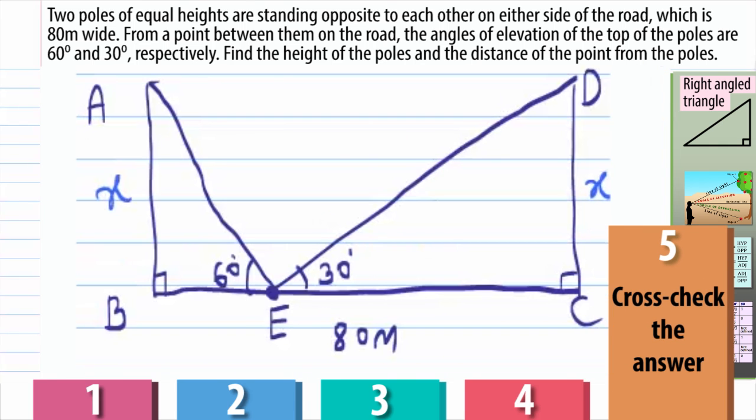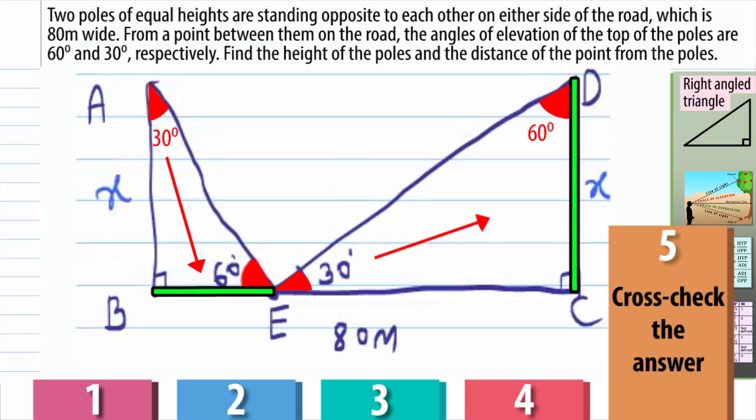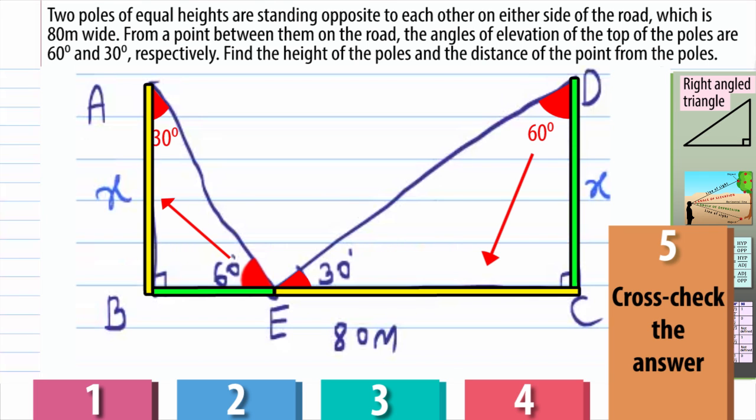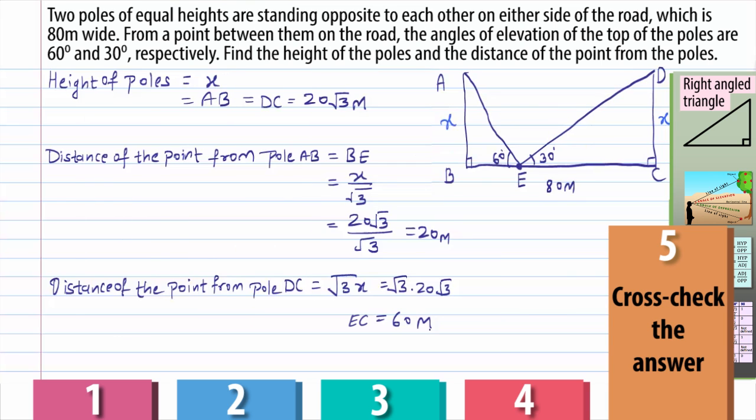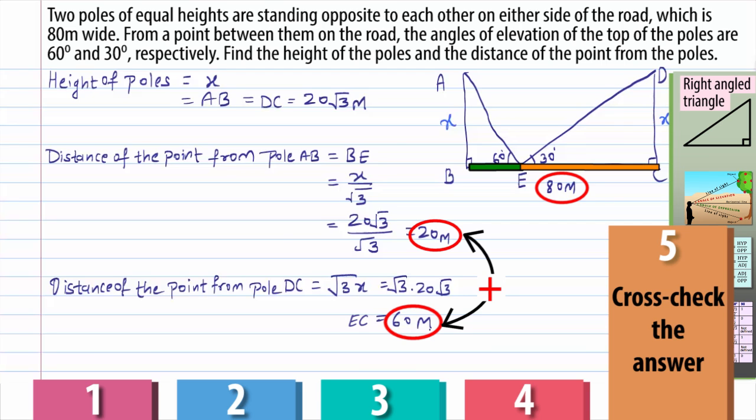So the question is solved and we can also cross-check the same. For example, in the diagram, this angle is 60 degrees, so this is 30. Same way, this is 30, so this would be 60 degrees. Now, it's true that the side opposite to 30 degrees will be shorter in length than the side opposite to 60 degrees. And hence, one can guess that the value of side BE has to be lesser than the side EC, which is true and also their sum is 80. So this shows that our answer is correct.